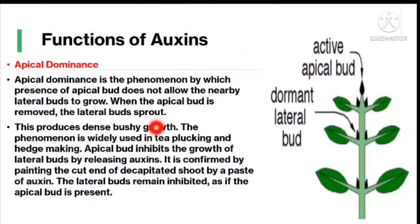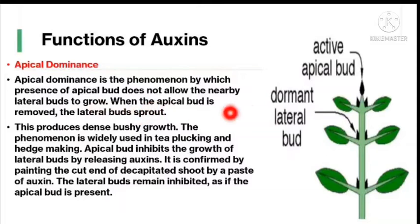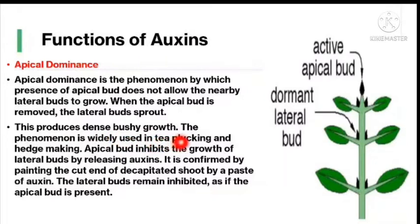Functions of auxins — first, apical dominance: apical dominance is the phenomenon by which the presence of the apical bud inhibits the growth of nearby lateral buds. When the apical bud is removed, the lateral buds sprout, producing dense bushy growth. This phenomenon is widely used in tea plucking and hedge making. The apical bud inhibits the growth of lateral buds by releasing auxins.